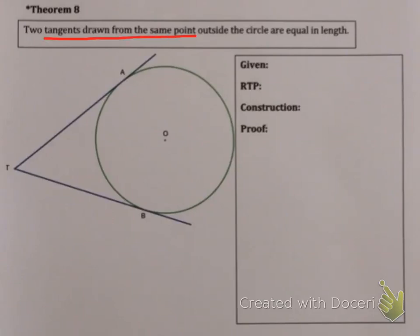Theorem 8 says if you have two tangents from the same point outside the circle - so in this example we have point T, and we have tangent TA and tangent TB - these two tangents according to this theorem are always equal in length. So we need to try and prove that TA and TB are the same thing.